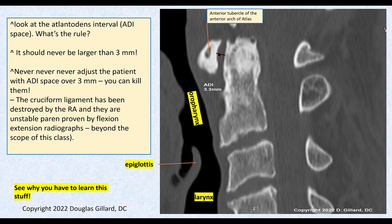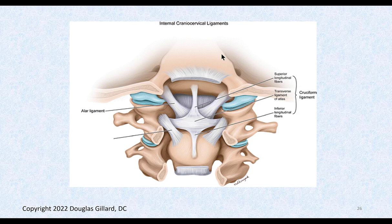I'm going to put ADI space on the test — you'll know it should never be greater than three millimeters; never adjust someone if it is. You should know the cruciform ligament — that should be review. Why is it called cruciform? Cross-like. It has several pieces: the main piece is the transverse ligament of atlas, which holds atlas and axis together. Upper fibers, lower fibers. You also have alar ligaments that connect to the dens.